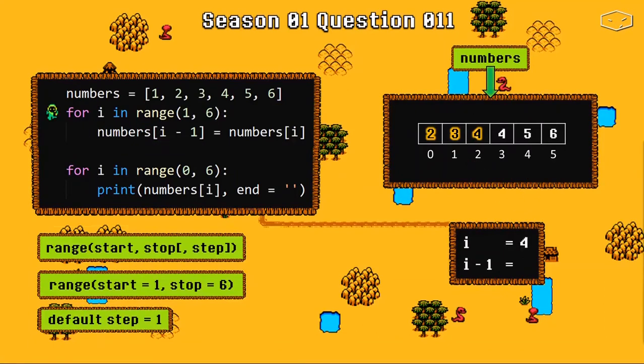Then i became 4, i minus 1 became 3. Python goes to the index 4 of our list, copies the value and pastes into the previous position.